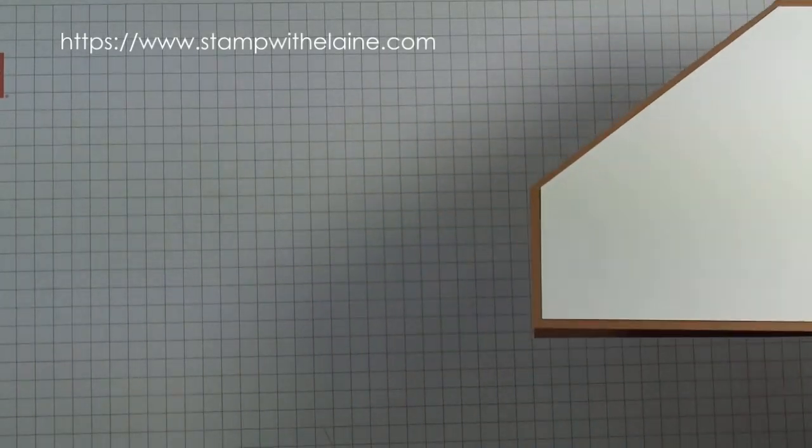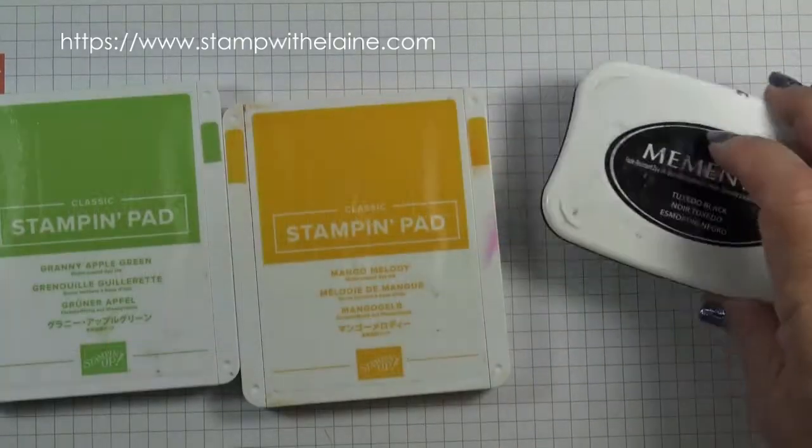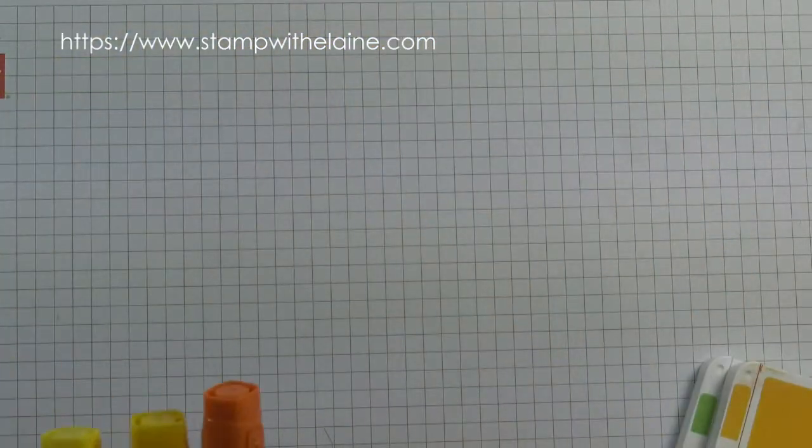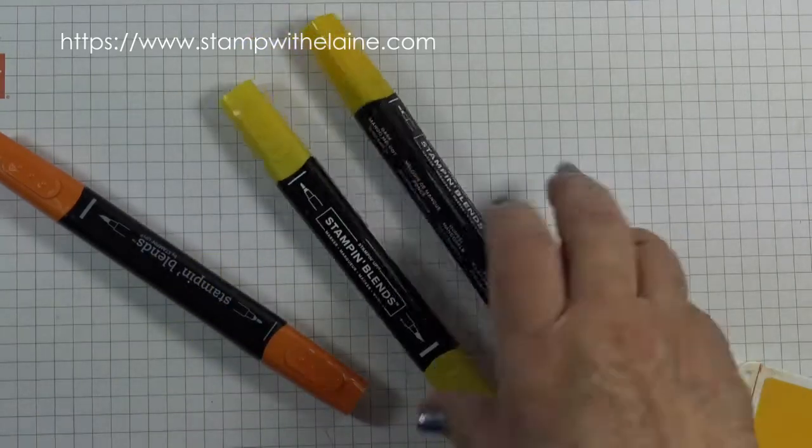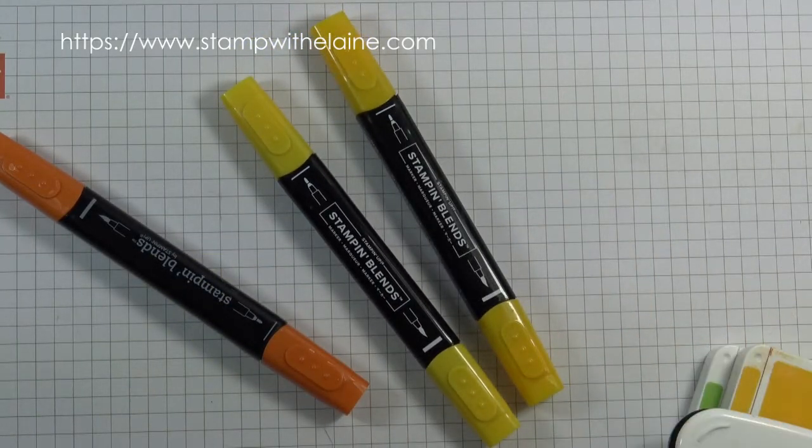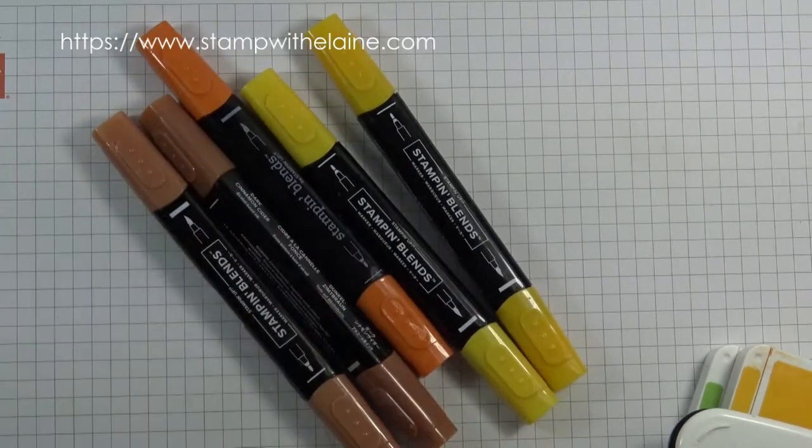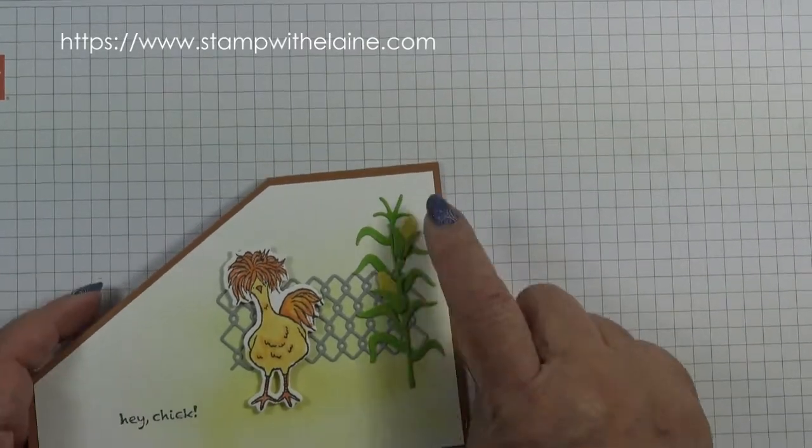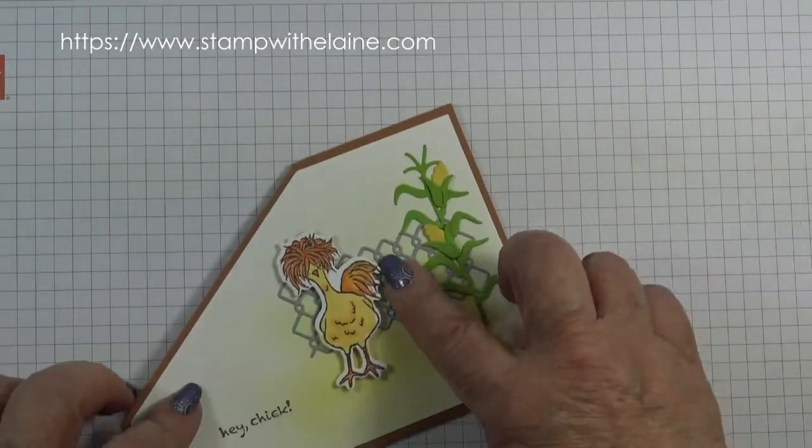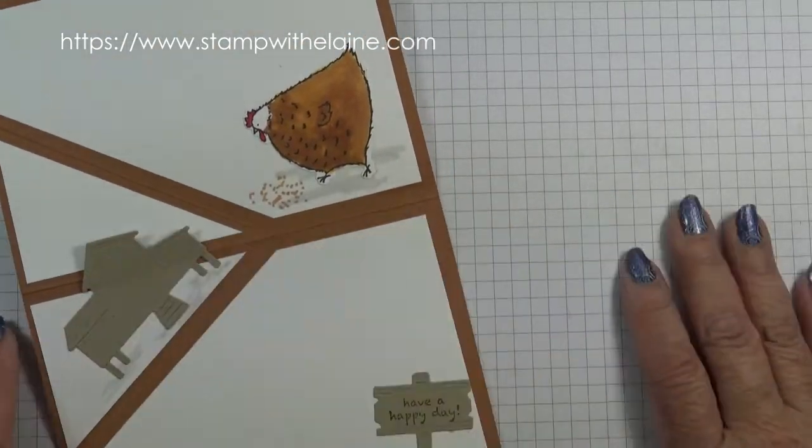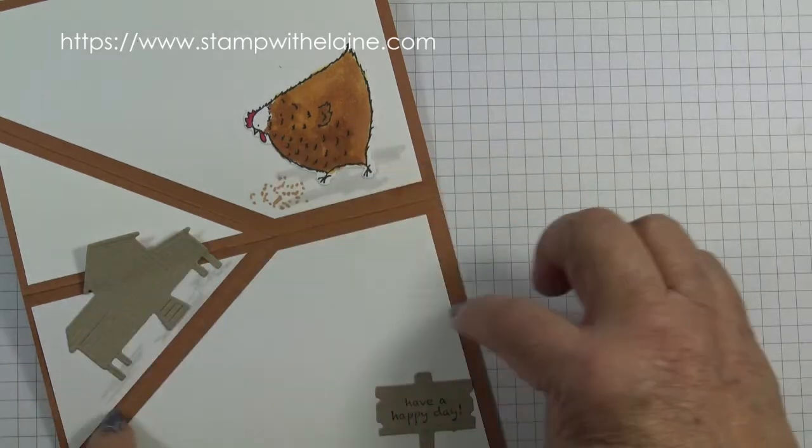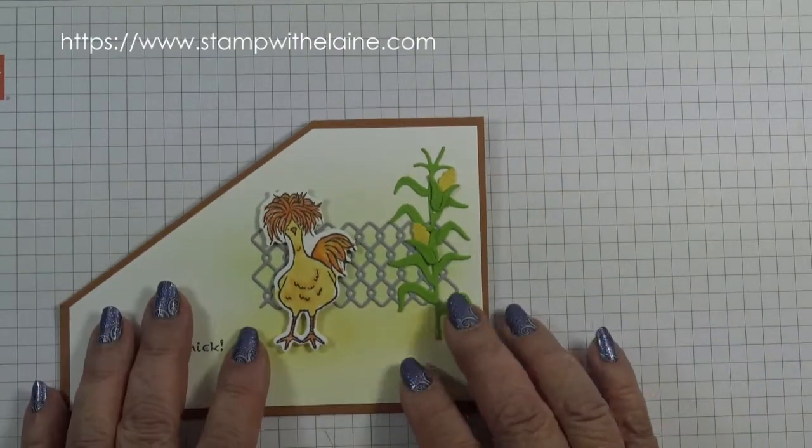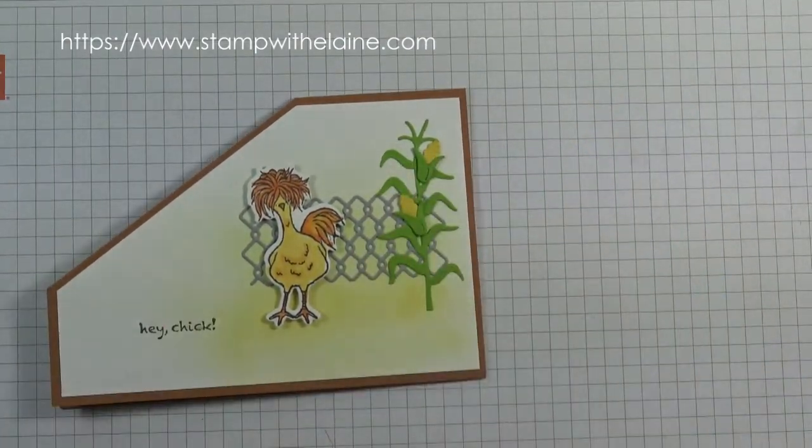I'll run through the other items you need to make the card. We need Tuxedo Black Memento ink, Granny Apple Green and Mango Melody. And in the blends we need Dark Pumpkin Pie and Mango Melody. Also Cinnamon Cider. The blender brushes. And of course we need Granny Apple Green, Daffodil Delight, Basic Smokey Slate and Crumb Cake to die cut the chicken coop, the sign, the corn and the chain link fence.